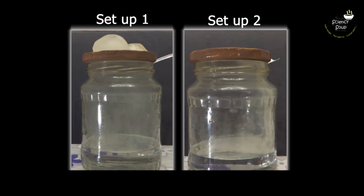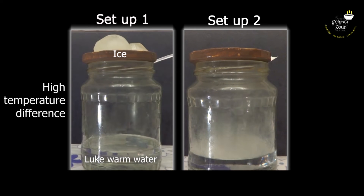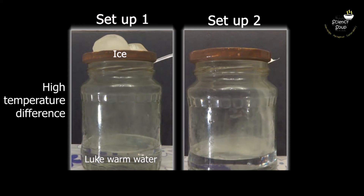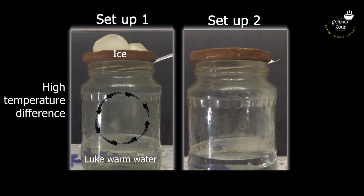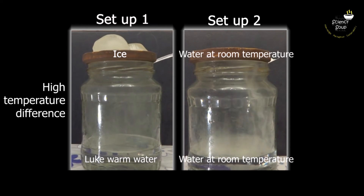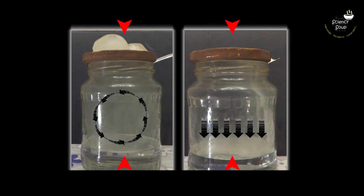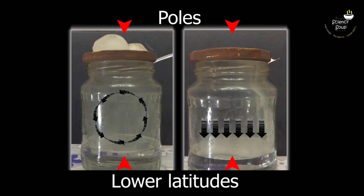Let's try and understand what happened here. In the first setup, where we had put ice on the lid and lukewarm water in the jar, there was a high temperature difference created. This temperature difference created a pressure difference that forced the fumes to move in a circular motion. In the second setup, the lid and the jar both contained normal temperature water, and hence there was no or minimal temperature difference — this forced the fumes to sink in one direction as guided by gravity. The lid of the jar and the inside of the jar in these two setups can be compared to the poles and the lower latitudes, and the fumes to the polar vortex.